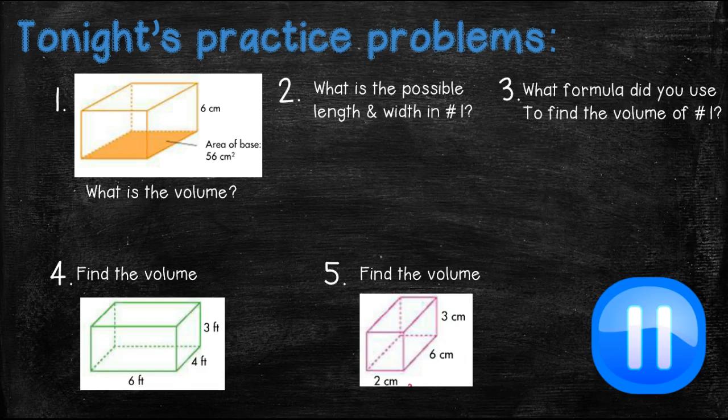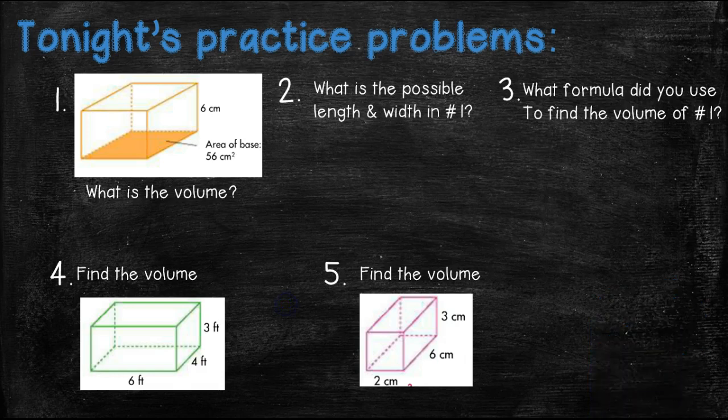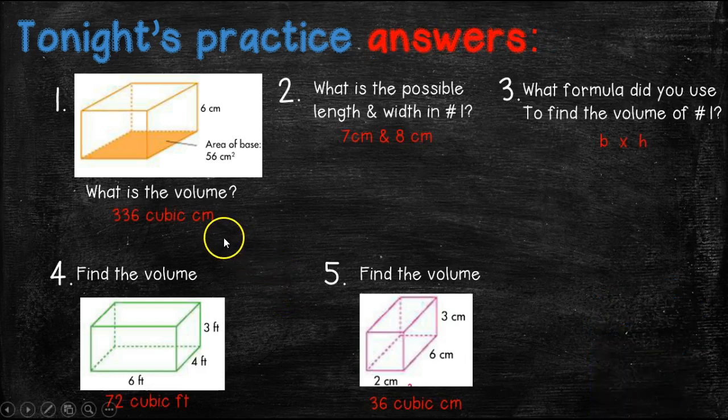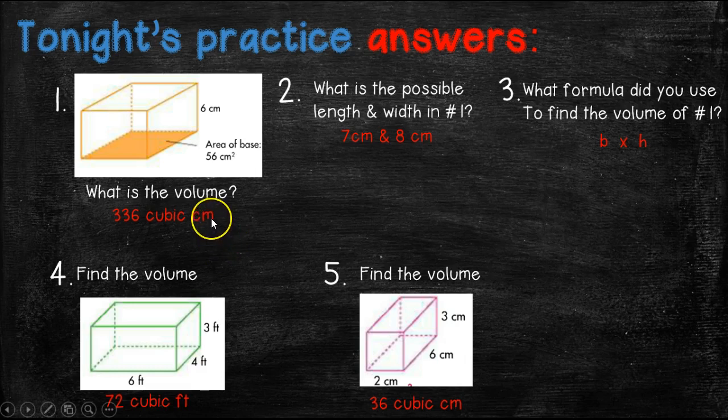All right, coming back in five, four, three, two, one. All right, tonight's answer is the answer to number one is 336 cubic centimeters. We knew this because we multiplied 56 times six. So what is the possible length and width in problem number one? Well, we're looking for the factors of 56. And we know that seven and eight are the only factors. So we know that seven centimeters and eight centimeters have to be the length and the width. And then here, what formula did we use to find the volume? Well, we use the base, which was the area of the base, which was 56 centimeters. And we multiplied it by six centimeters by the height. So base times height.